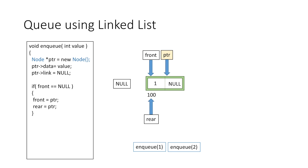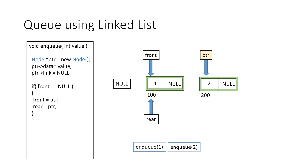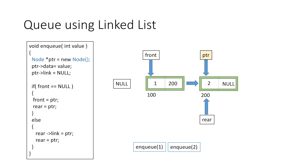If we enqueue another element, say 2, we create a new node whose address is stored in ptr, set its data part to 2, and its link part to null. Since front is not equal to null, we go to the else case: we make the link part of rear equal to ptr, so the first node now points to the second node at address 200, and then we move the rear pointer to ptr. We have successfully inserted the second node.